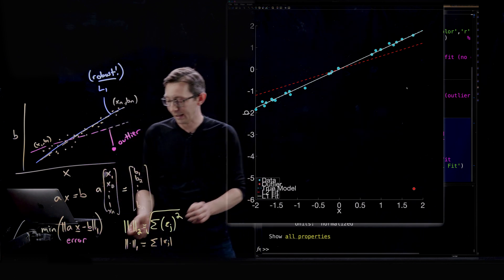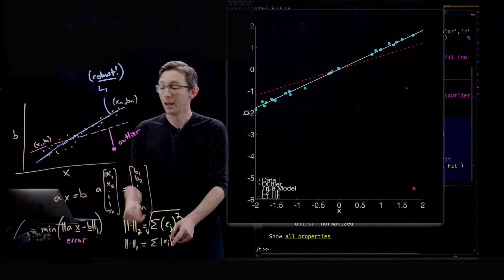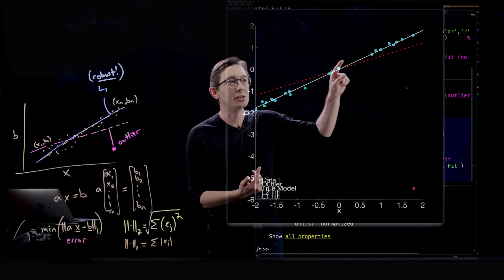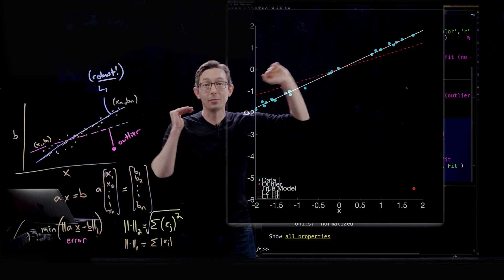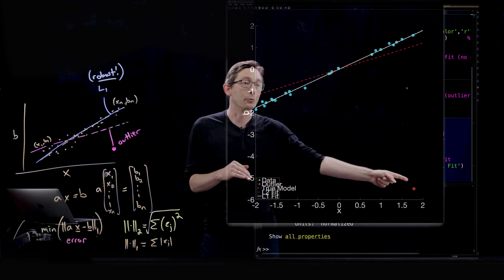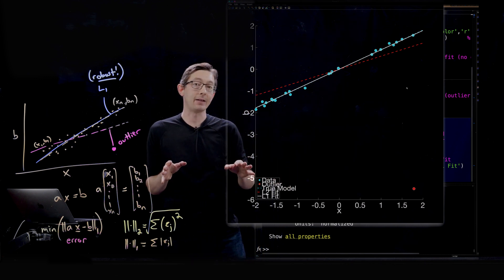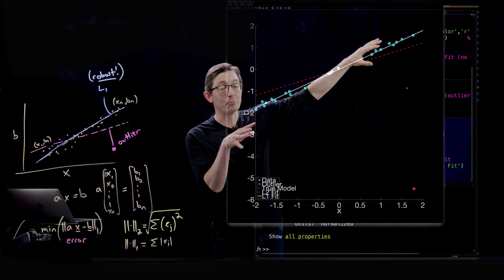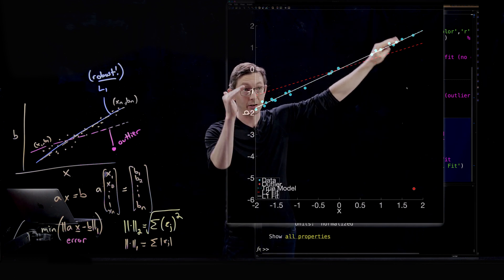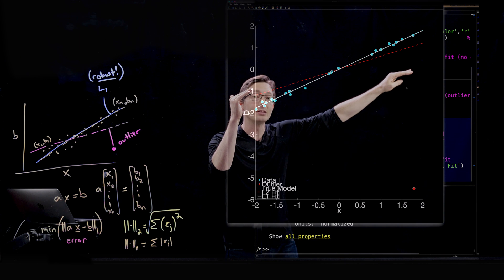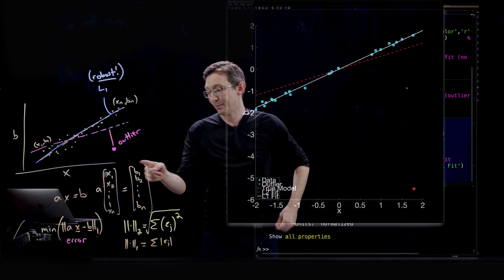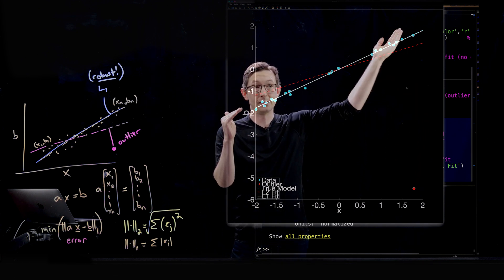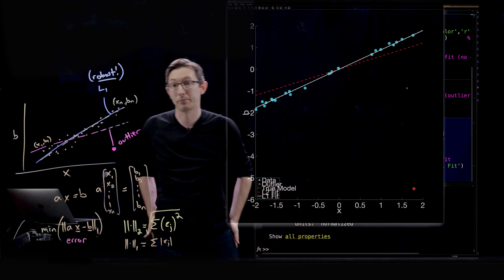So now when I swap out my two norm for a one norm and I do the same optimization, now I get this white line which is almost perfect. It is almost exactly where it should be, so it really has mitigated that effect of that single outlier. So that single outlier plagued my L2, my least square solution, this red curve, it was terrible. But when I use an L1, when I minimize the L1 norm of the error, it's extremely robust to this big outlier and it fixes the distribution back to where it should be.